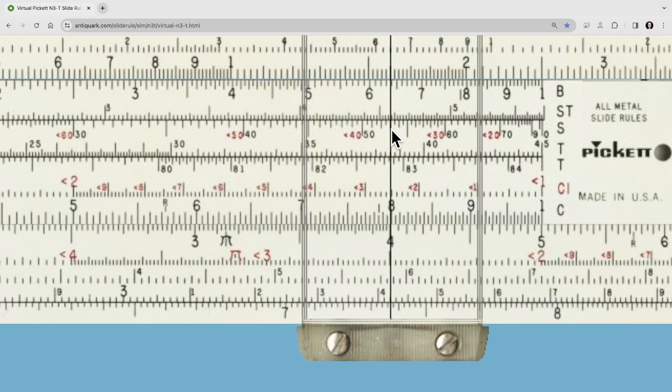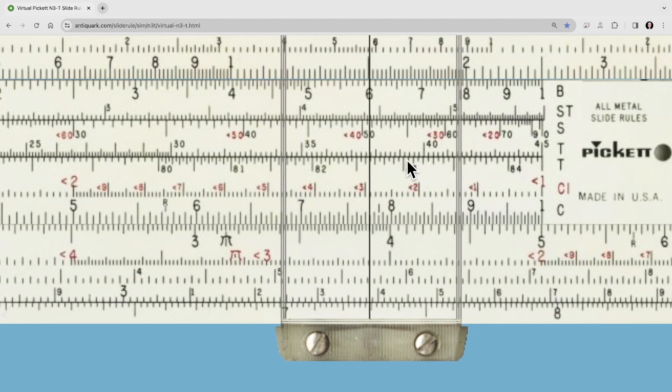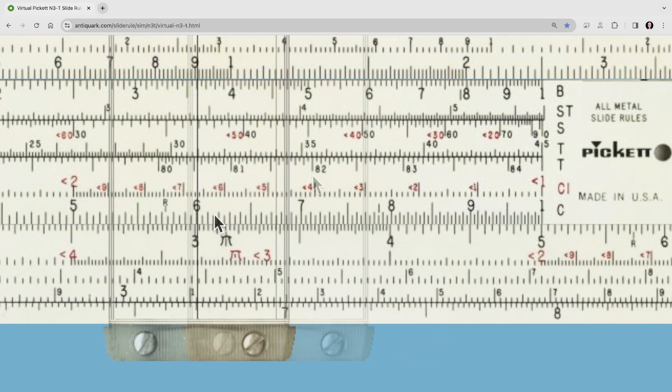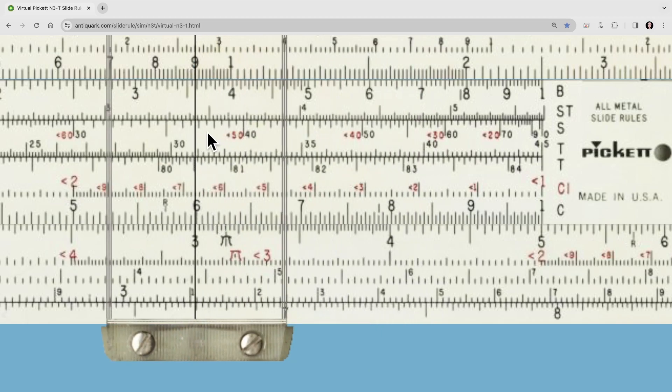Now likewise, if we come over here to the 3, we come straight up, and we come up here to the sine scale, and we read off the sine. It's 30, 35, 36, and it's roughly 36.9.